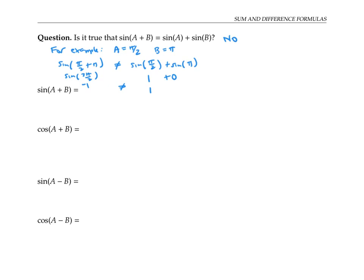Instead, we need more complicated formulas. It turns out that the sine of the sum of two angles, A plus B, is given by sine of A cosine of B plus cosine of A sine of B. The cosine of A plus B is given by cosine A cosine B minus sine A sine B.